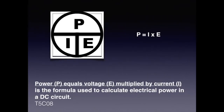Power is expressed in watts. The formula is power equals current times voltage. Get out a sheet of paper and draw a pie circle or pie chart like the one shown. Memorize this because it will help you solve problems on the exam. By placing your finger over the P, you can see that P equals I times E. If you place your finger over the I, you can see that it equals P divided by E. For the exam, understand that power equals voltage multiplied by current is the formula used to calculate electric power in a DC circuit.